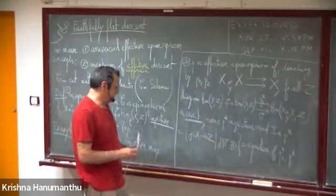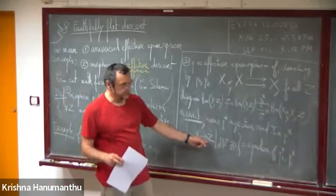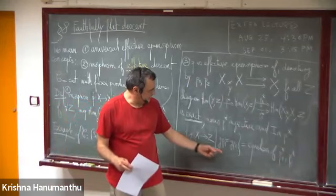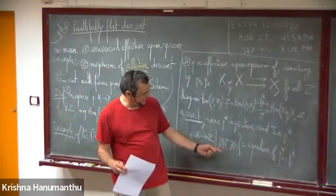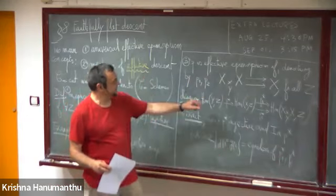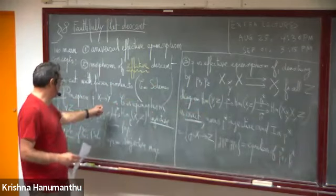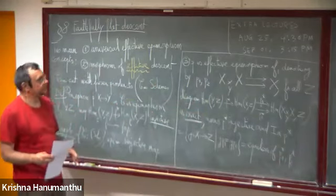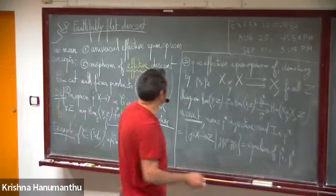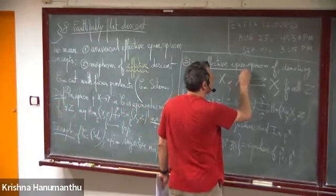Any map from X to something whose composition with the two projections are the same already comes from Y. This is the most useful notion.